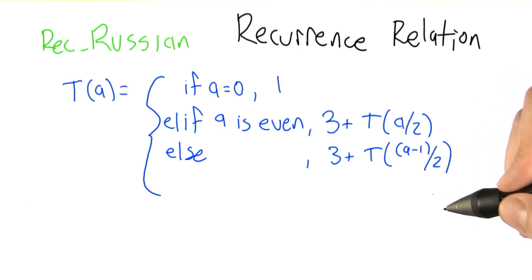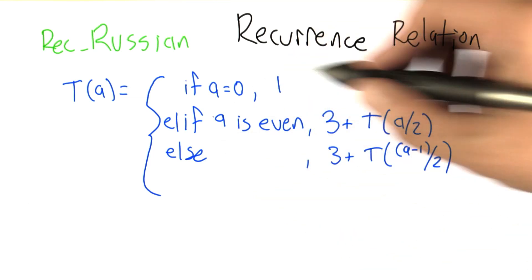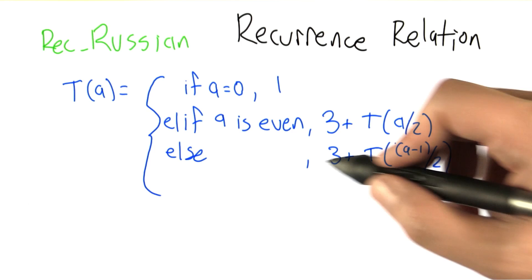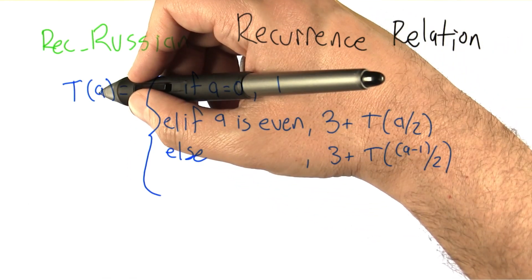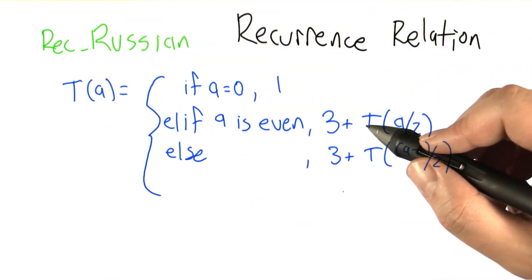So 3 statements plus this particular kind of recursive call. So this now is a mathematical specification of a function. We don't know at the moment what the relationship is between a and t of a, but at least it's fully specified.